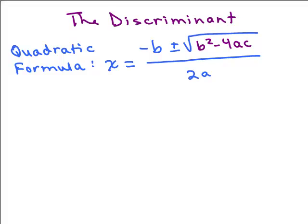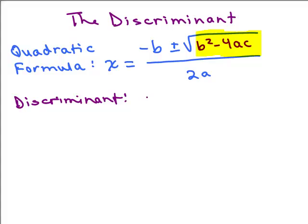We're going to talk about the discriminant. Looking at the quadratic formula — x equals negative b plus or minus the square root of b squared minus 4ac, all over 2a — the discriminant is the part underneath the square root symbol: b squared minus 4ac. If you plug in the values of a, b, and c, you'll get a number. So the discriminant is the value of b squared minus 4ac.